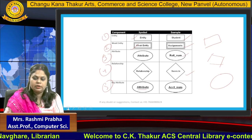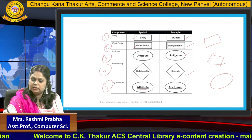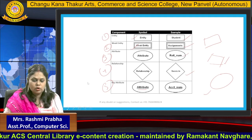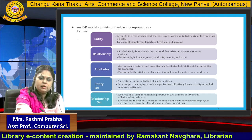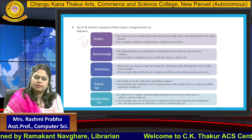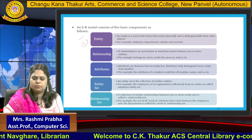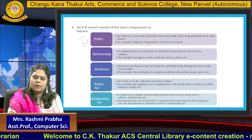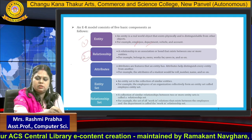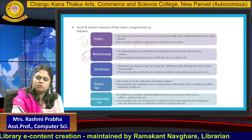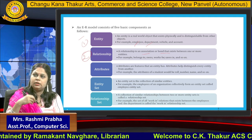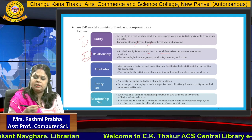One by one we will see what are the different types of entities, relationships, and attributes in the upcoming video. An entity relationship model consists of five basic components. The first component is entity — a real-world object that exists physically and is distinguishable from other objects, like a department with its name and total number of employees, or an employee with a name and ID. The second component is relationship — an association or bond that exists between one or more entities, like a student owns a vehicle, a student enrolls into a course, or a teacher teaches a class.